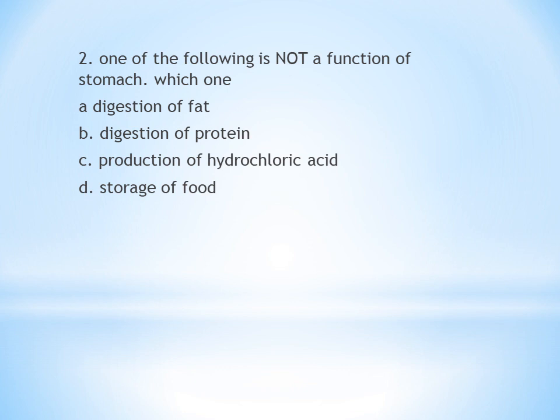Second question: Which of the following is not a function of the stomach? A. Digestion of fat, B. Digestion of protein, C. Production of hydrochloric acid, D. Storage of food. The stomach functions include food storage, producing hydrochloric acid, and protein digestion via pepsin enzyme (pepsinogen converts to pepsin). Digestion of fat is not a function of the stomach. Answer is A.